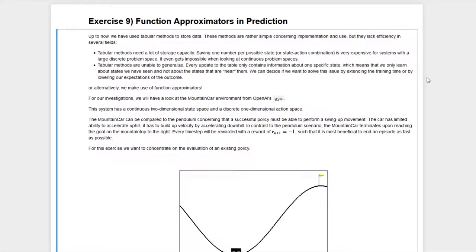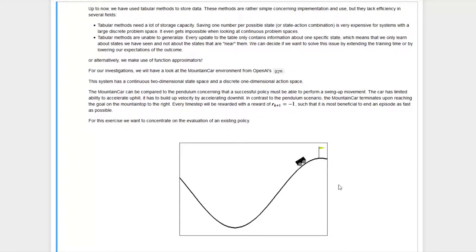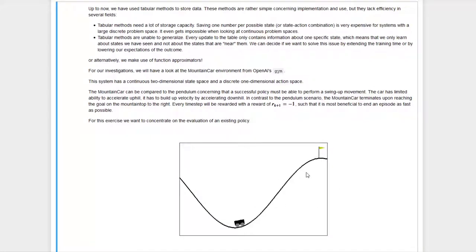We can overcome these issues by making use of function approximators. For this exercise we will look at the mountain car environment from Gym. This environment has a continuous state space which consists of the position and the velocity of the car. The action space of the mountain car is discrete and gives us three options: we can either accelerate to the right, to the left, or we can do nothing.